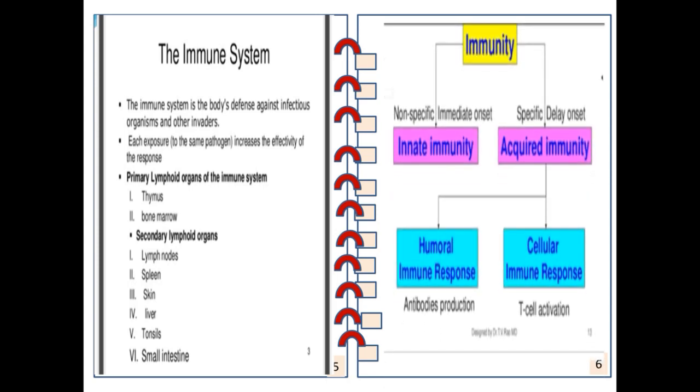Immunity can be categorized into two types: first is nonspecific or immediate onset, and second is specific or delayed onset. Nonspecific is named innate immunity which is natural, and specific immunity is acquired immunity. Acquired immunity is again of two kinds: it may be humoral immune response where antibodies are produced, or it may be cellular immune response where the activation of T cells takes place.